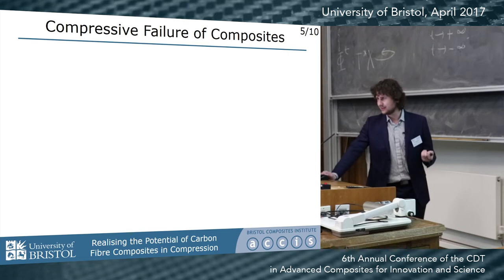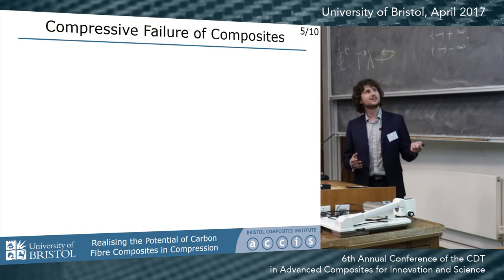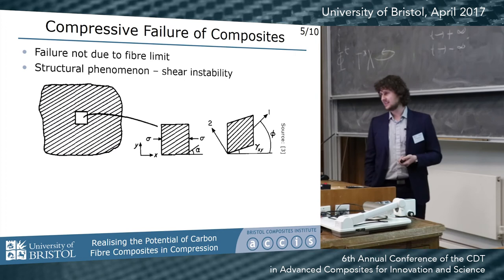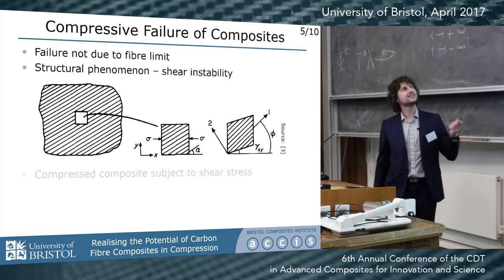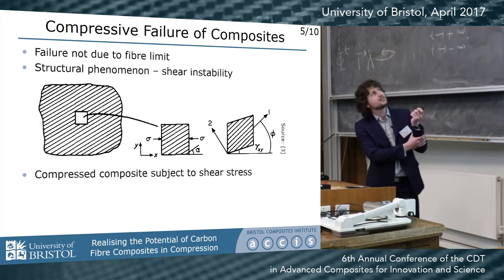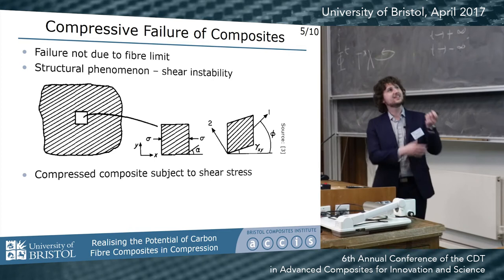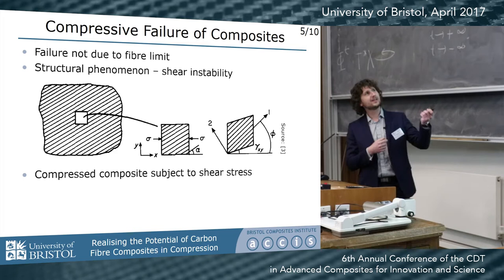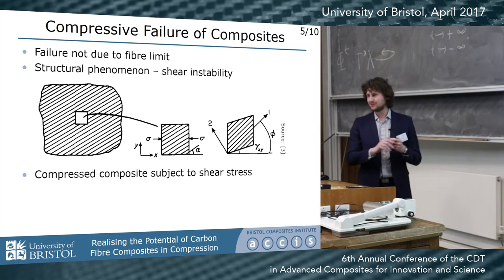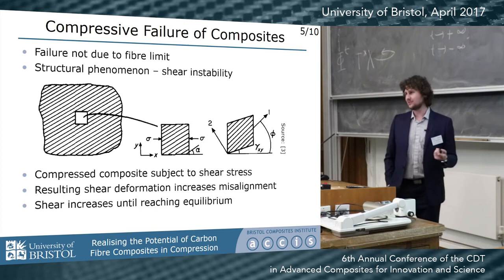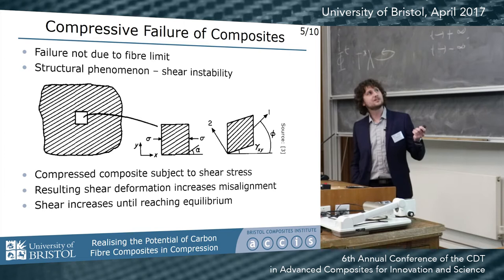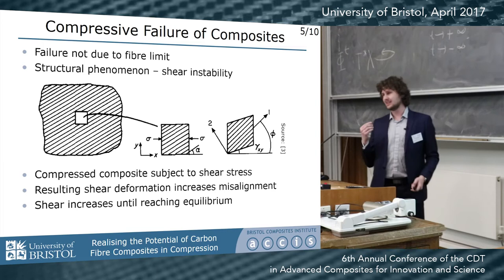Why does failure occur if carbon can go up to 15% but our composites go to 1.5 or less? It's not a fiber limit — it's a structural phenomenon. It's shear instability, similar to buckling. A composite is subject to stress, and we have fibers that are initially misaligned, which can be very small because nothing is exact in nature. When we try to compress this misaligned composite, we get complementary shear, causing shear deformation, which in turn causes more shear. The material will eventually reach equilibrium, but at a high enough stress this equilibrium is lost, and that's when we get what we call micro-buckling or kink band failure.